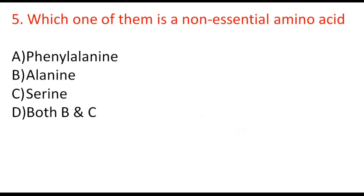Next question: which one of them is a non-essential amino acid — phenylalanine, alanine, serine, or both B and C? The correct option is D, both B and C, because alanine and serine are both non-essential amino acids.